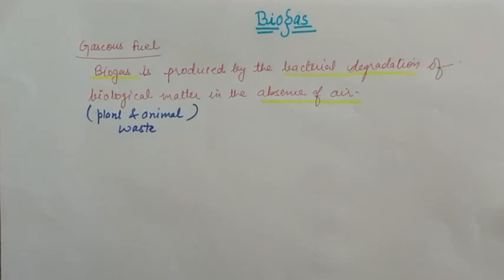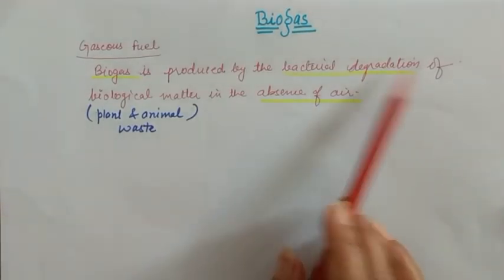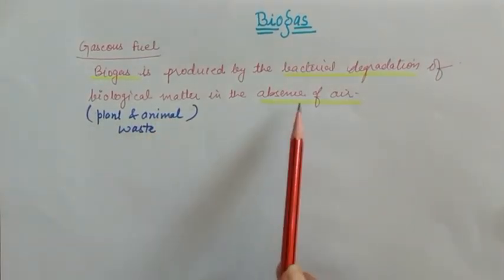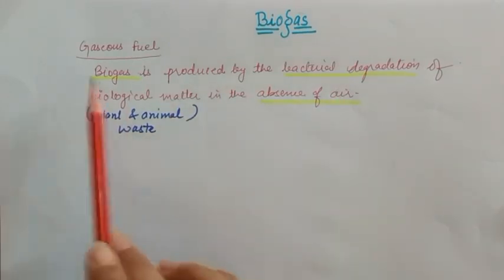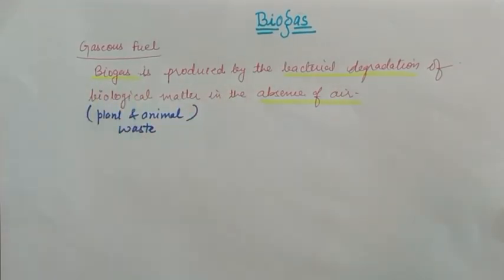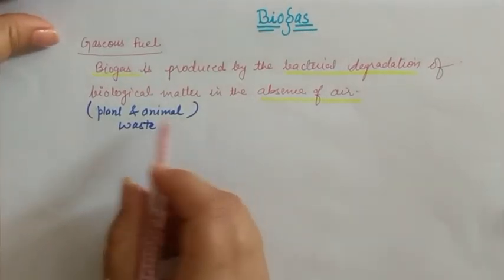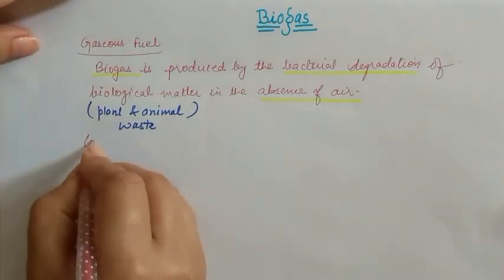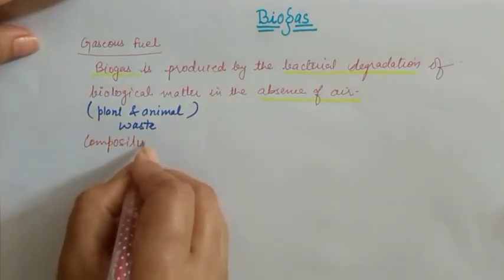The important condition is: in the absence of air. Degradation of plant and animal waste in the absence of air — this produces biogas. And what is the composition of this biogas? Here I am writing the composition of biogas.